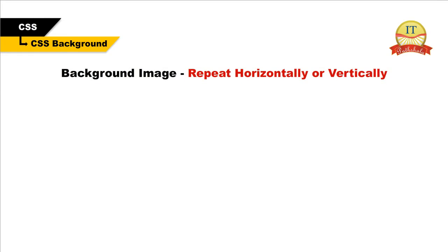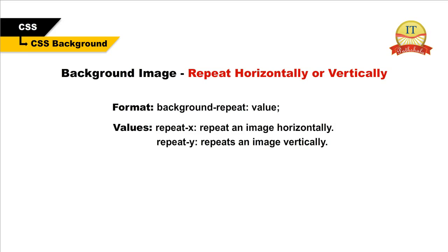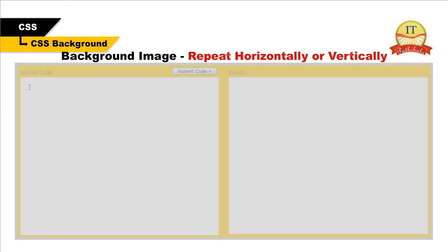Background image — repeat horizontally or vertically. Using the background image property, you can set if an image used as a background of an element is to repeat horizontally or vertically on the screen. By default, the background image property repeats an image both horizontally and vertically. Setting the value as repeat-x repeats an image horizontally, and repeat-y repeats it vertically. Let's take an example.